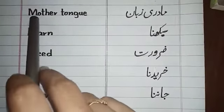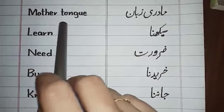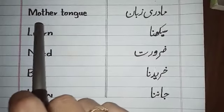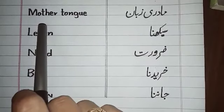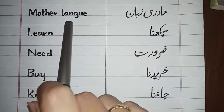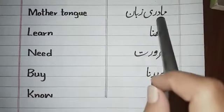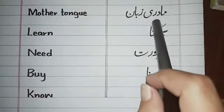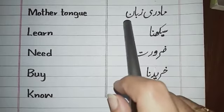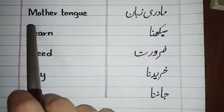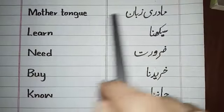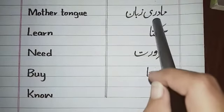The next word is Mother tongue. Mother tongue. And its meaning is Madhri Zuban. Mother tongue, Madhri Zuban.